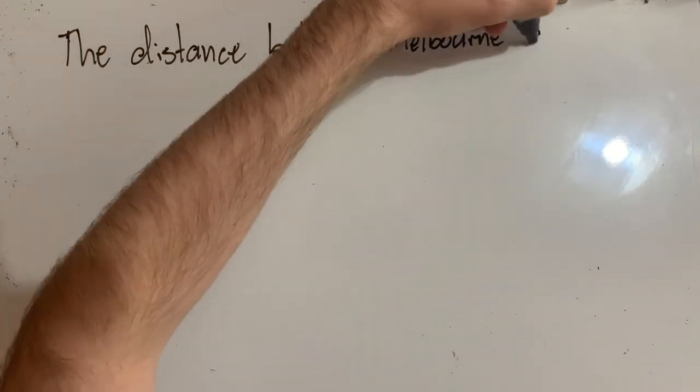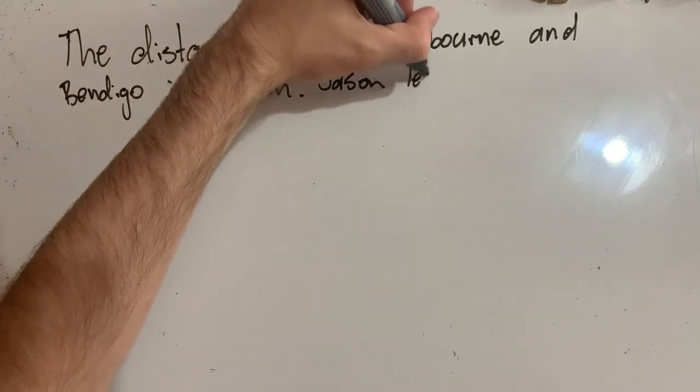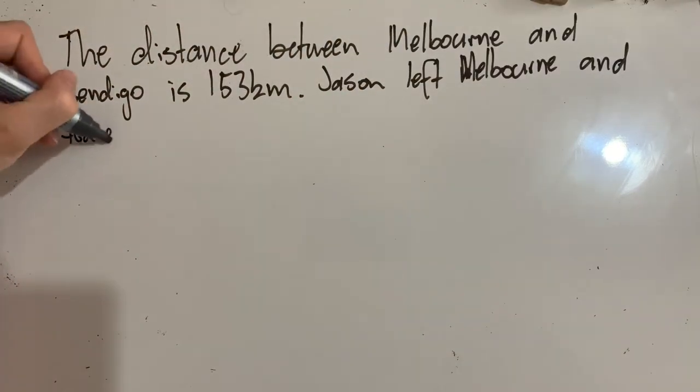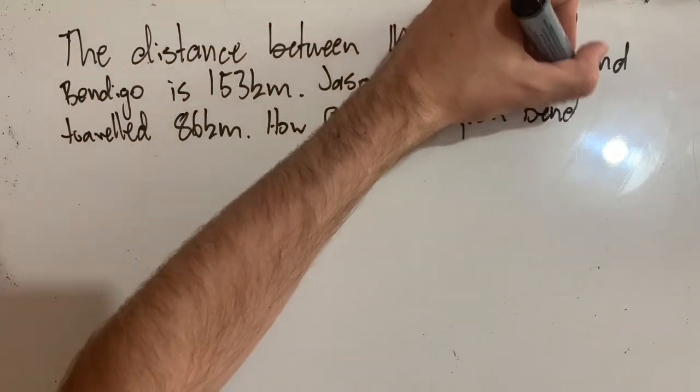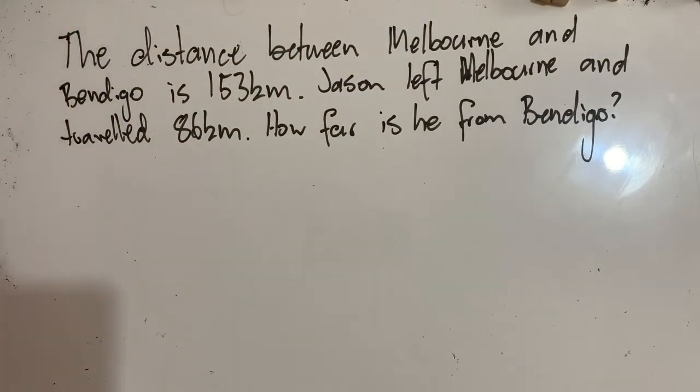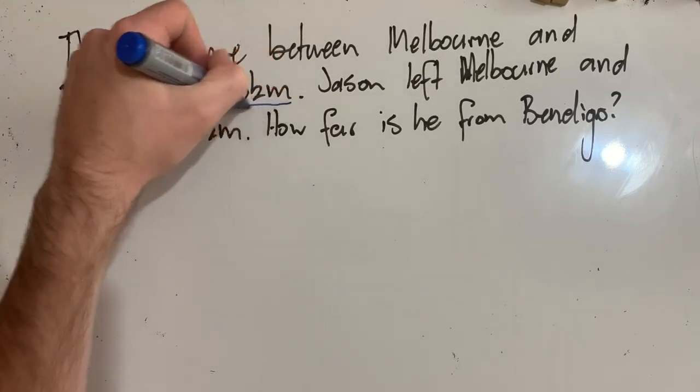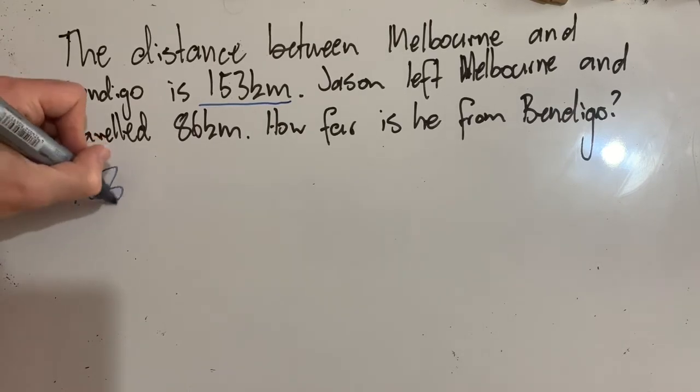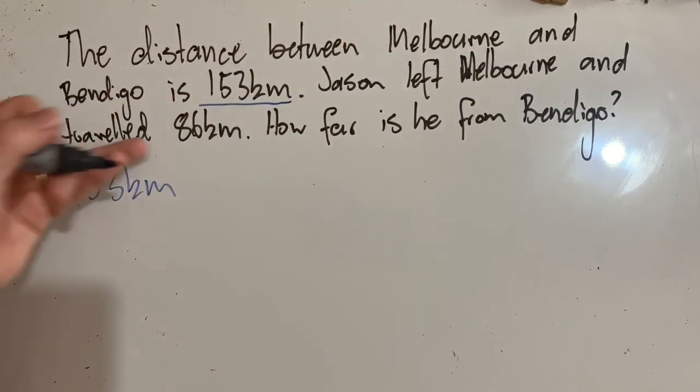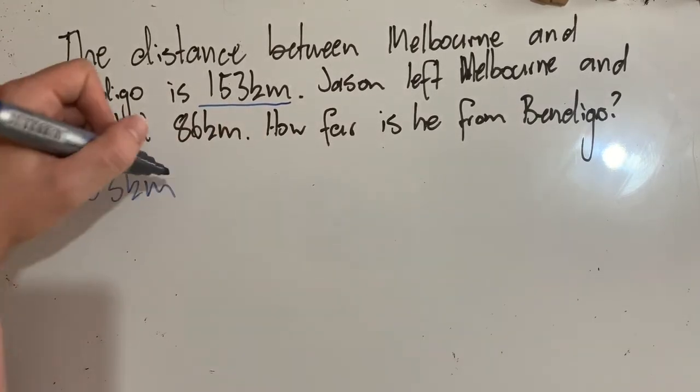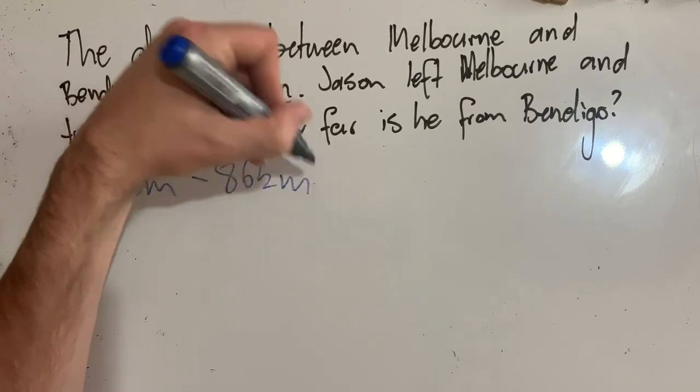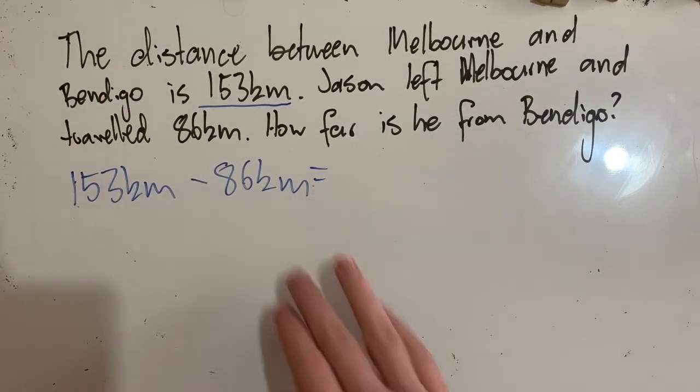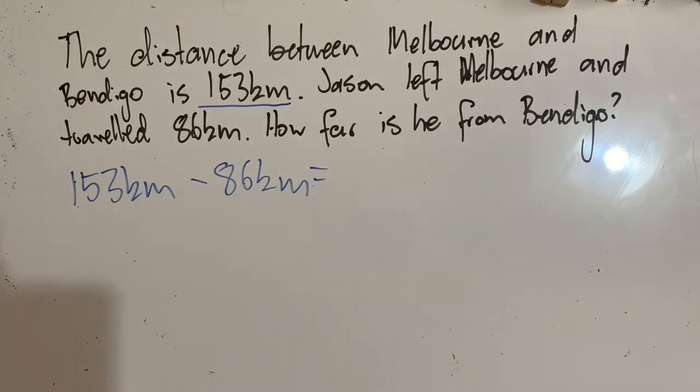Let's do a worded problem, shall we? The distance between Melbourne and Bendigo is 153 kilometers. Jason left Melbourne and traveled 86 kilometers towards Bendigo. How far is he from Bendigo? Let's first find out the problem that we want to solve. So he started with 153 kilometers to travel. So we'll start with 153 kilometers and he traveled 86. So he cut it down on that distance by 86 kilometers. So we want to find out how far he's got left to go. We want to find out what's left, what the difference between these two numbers is, and we can use standard notation to do that.